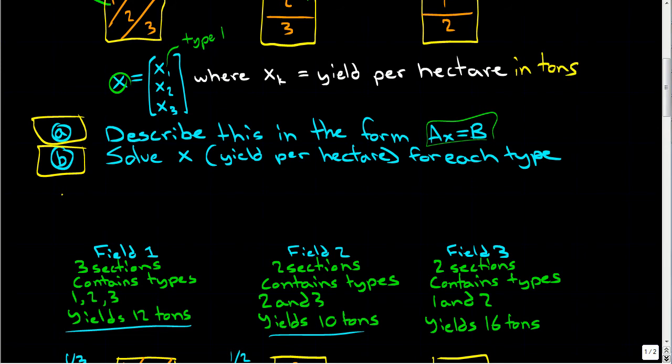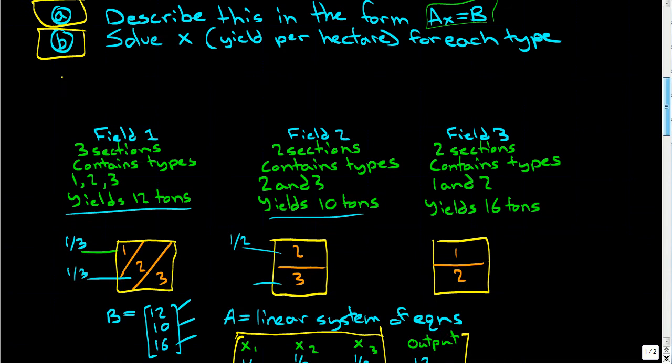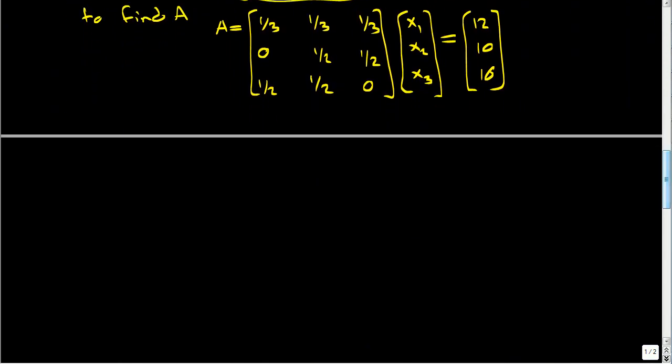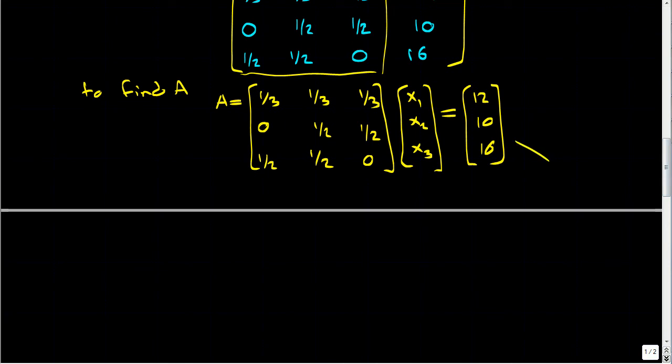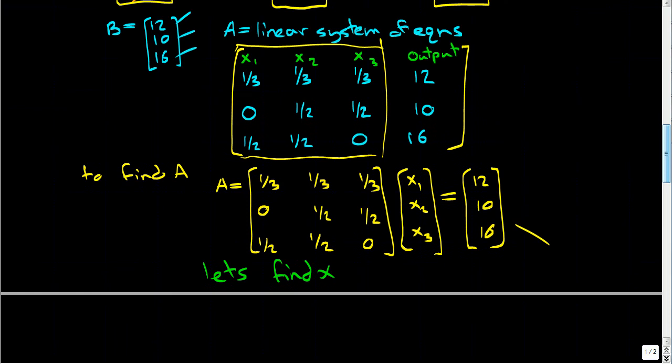Now we have to solve for that. We know from our last part of the video that A equals our system of linear equations, and we knew what B was. So let's find X. We can find X just by simply solving this linear system of equations. So let's copy and paste this.